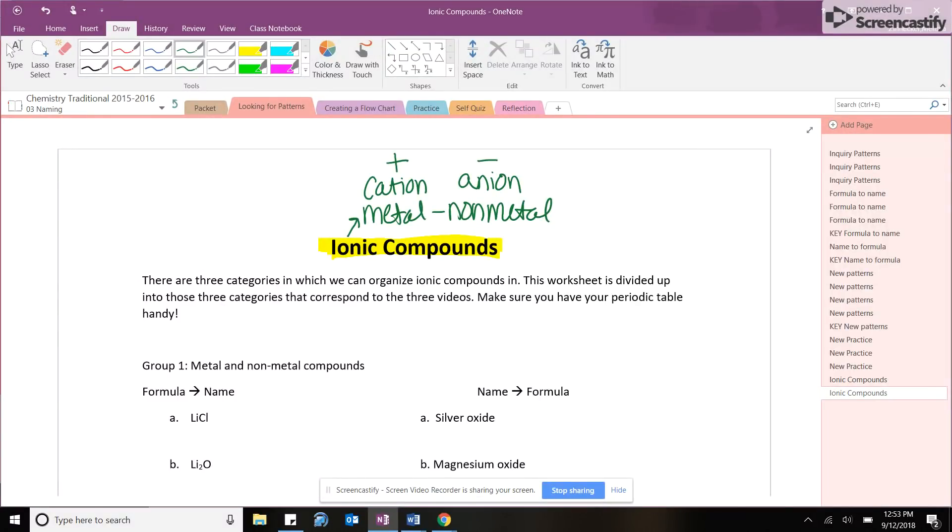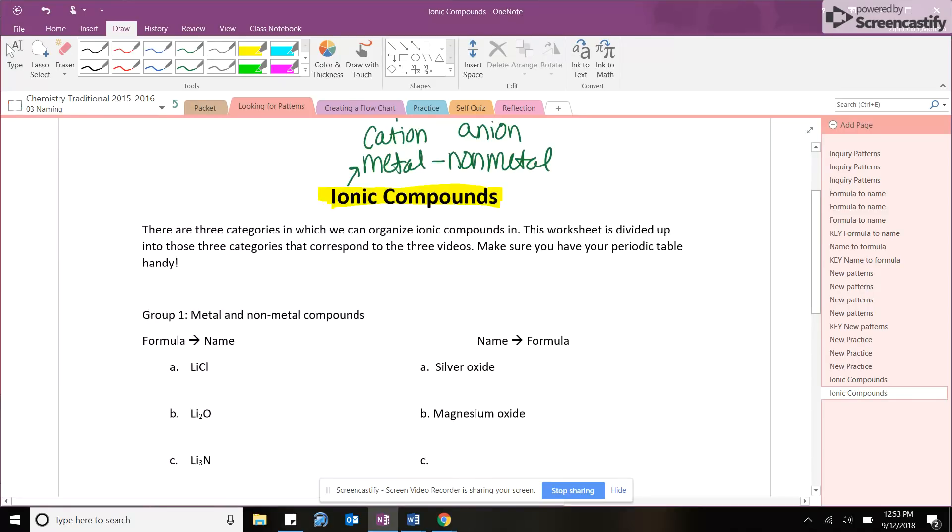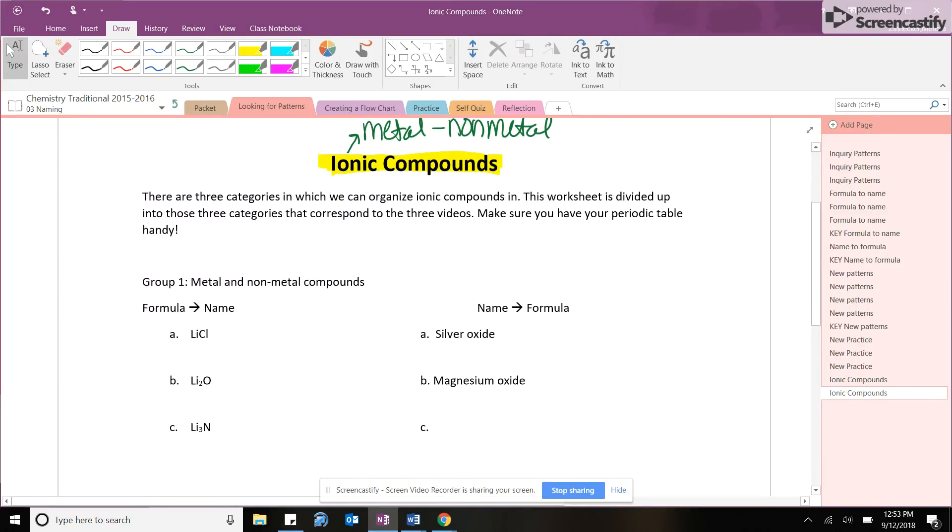Do we always have to put the positive one first and then the negative one? Yes. The cats come first before your anions. So like if we look at our compounds that we have here, I see you even said it says metal and non-metal next to group one. We always start with the metal and then we go with the non-metal.